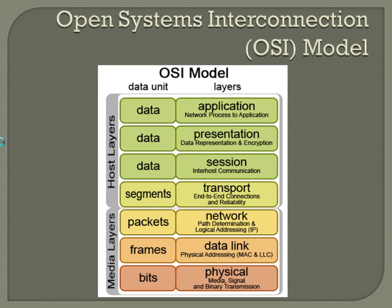Above that, you've got your session layer, which basically sets up sessions of data between two links. Above that, presentation — usually this is raw file formats like GIF files and JPEGs; those are part of the presentation layer. And then at the very top, you have your application layer, which is when you're using a program — obviously that's an application.